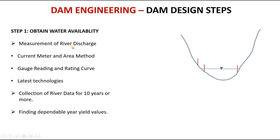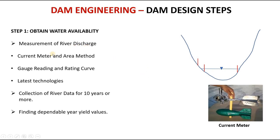To measure river discharge, we use the current meter and area method. The current meter gives velocity at the particular point wherever you place it. You then work out the area of the cross section, and multiplying velocity by area gives you the discharge.